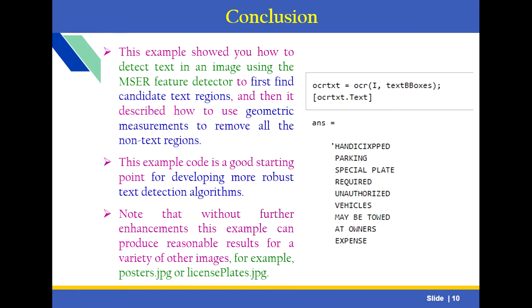In conclusion, this example shows how to detect text in an image using the MSER feature detector to first find candidate text regions, and then described how to use geometric measurements to remove all non-text regions. This example code is a good starting point for developing a more robust text detection algorithm. Without further enhancement, this example can produce reasonable results for a variety of other images — for example, detecting text on posters or identifying license plates.